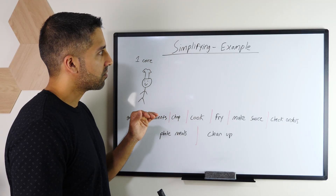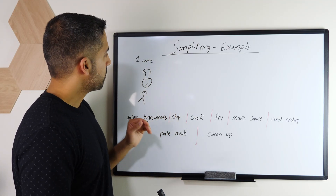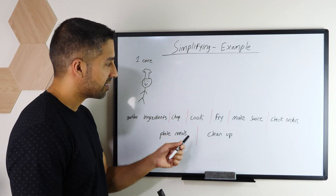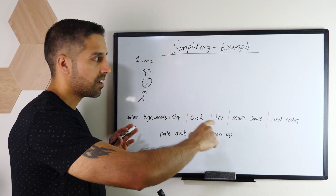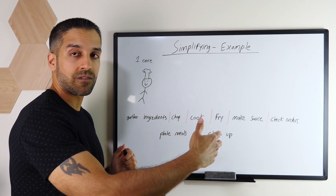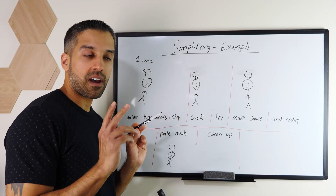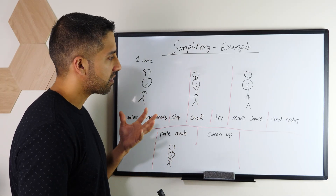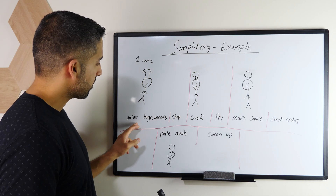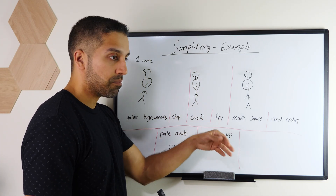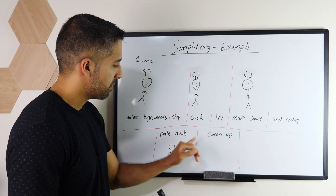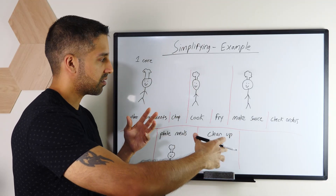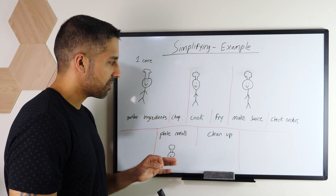This will really simplify everything we've learned. We'll compare it to the analogy of a kitchen and restaurant. One core equals one chef. This one chef has a huge set of tasks — multiple orders — for one core to work on. It's not very efficient; they have to jump between different dishes and orders. Now, four chefs equals a quad-core processor. One chef gathers ingredients and chops, the next is cooking and frying a different meal, another's making sauce and checking orders, and the last is plating meals and cleaning up.